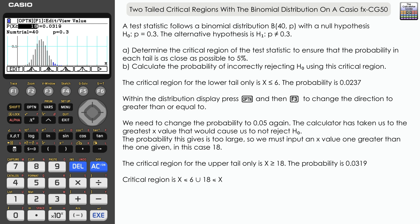Let's look at part b. We need the two probabilities we found for the critical regions. We're going to add them together. From the lower tail we had 0.0237, and from the upper tail we had 0.0319. If we add those together, we get an actual significance level of 0.0556. Essentially, we have a 5.56% probability of incorrectly rejecting H₀ using this critical region.